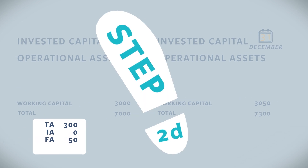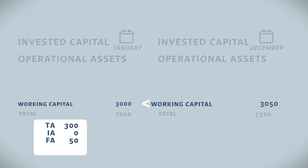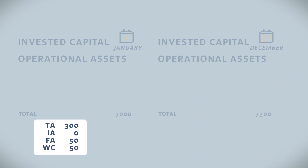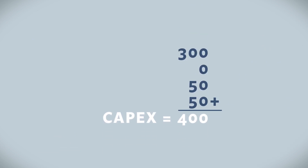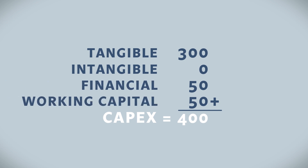Working capital has increased from 3000 to 3050, as a result of an investment in an inventory of additional shoes, so 50 goes to CAPEX. Now it is time to look at our total CAPEX. Let's sum it up: 300 tangibles, 0 intangibles, 50 financial assets, and 50 working capital. That gives us a total CAPEX of 400.